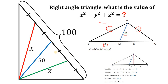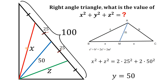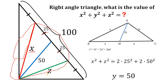Let's go to the question and solve this problem using the Apollonius Theorem. First, since the whole hypotenuse is 100, every segment must be equal to 25 units. Applying the Apollonius Theorem to this triangle, we get x squared plus z squared equals 2 times 25 squared plus 2 times 50 squared.